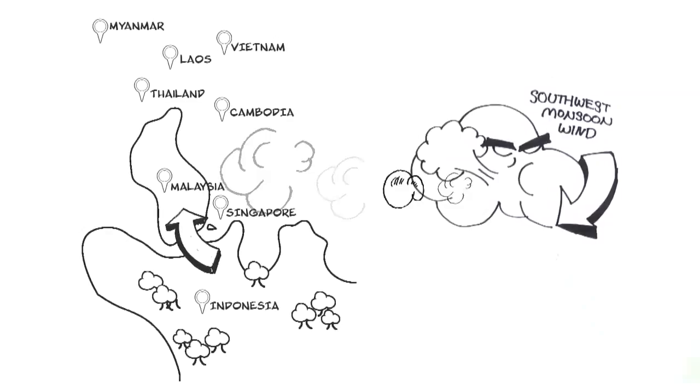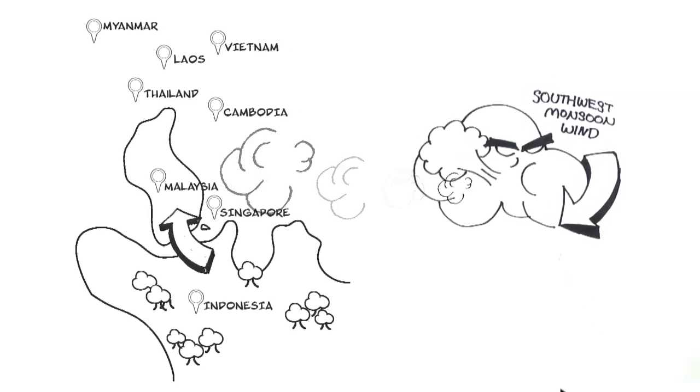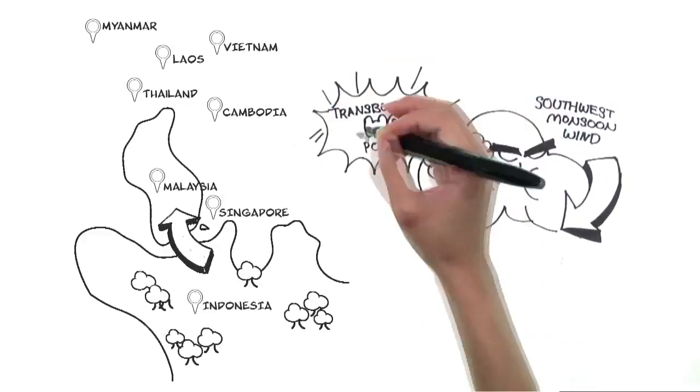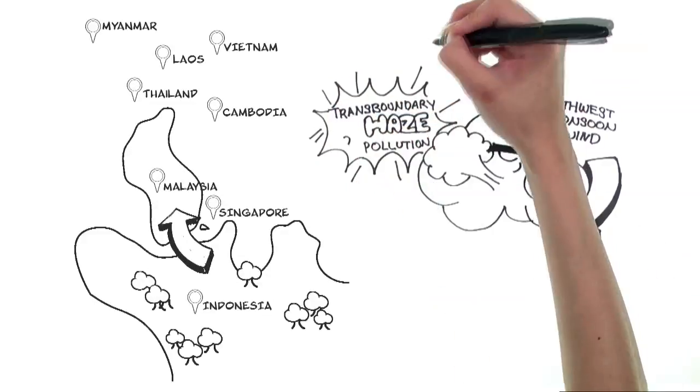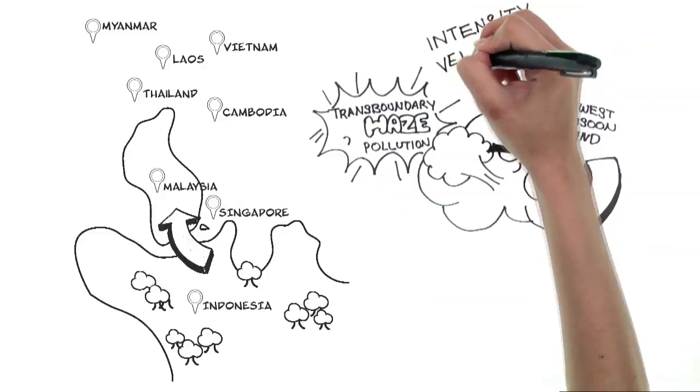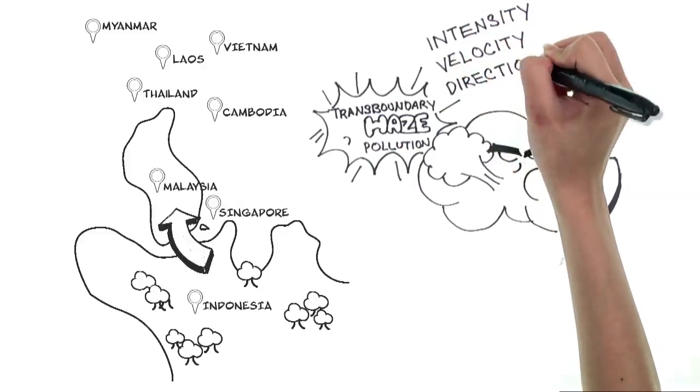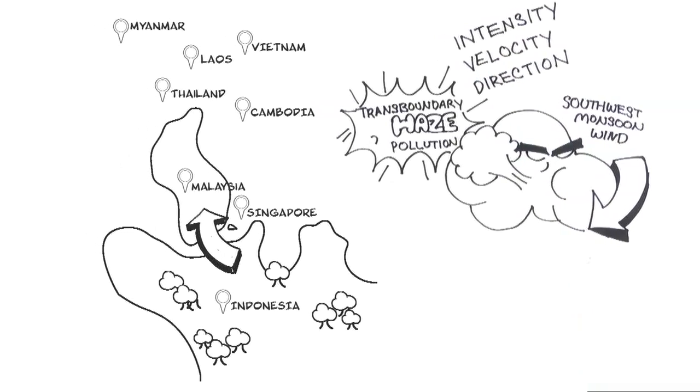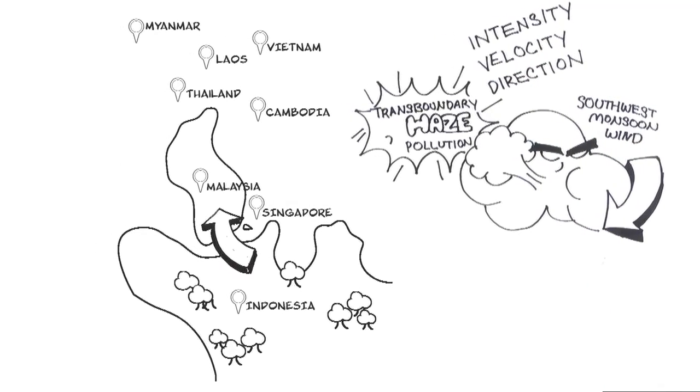When the haze crosses from one country to another, it is called transboundary haze pollution. This typically occurs between the months of June and September each year. The intensity, velocity, and direction of the southwest monsoon winds play a big part in determining how far the haze travels and how thick its fumes are.